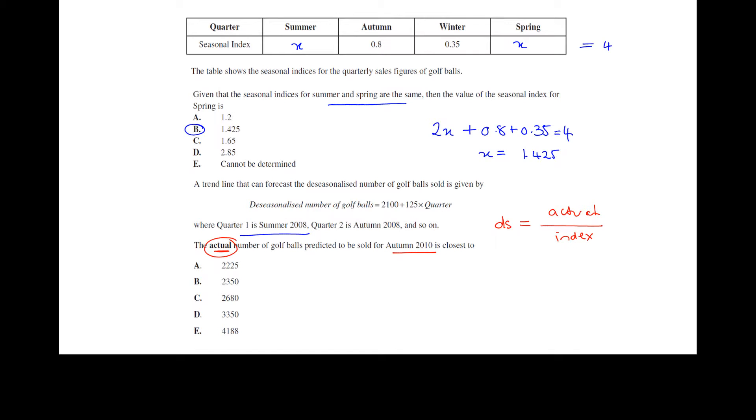Now what we know at the moment, the index for autumn is 0.8. We can use this equation here to get a prediction for the de-seasonalized value or the de-seasonalized number of golf balls and then we need to use this equation or this formula to convert that back to the actual value. So firstly, if quarter one is summer 2008 and we want the value for autumn 2010, we need to work out well which quarter are we going to sub in to the equation or the formula above. And so some of you will write that out but we can say that autumn 2010 is quarter 10. So my de-seasonalized golf balls will be 2100 plus 125 times 10 and that means I end up with 3350 golf balls as my de-seasonalized value.